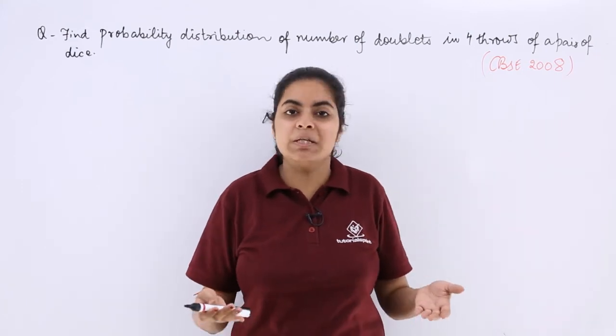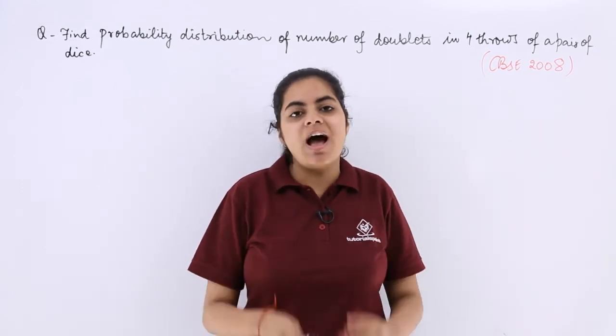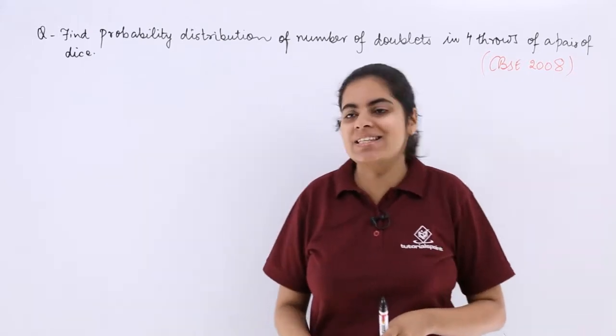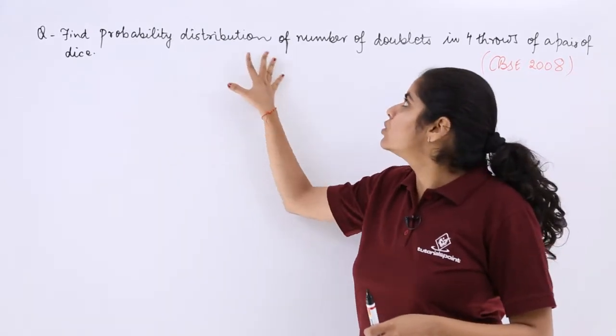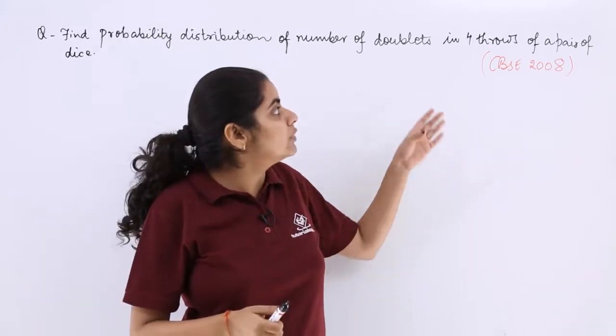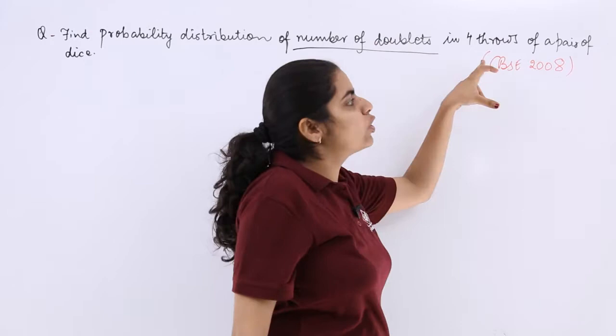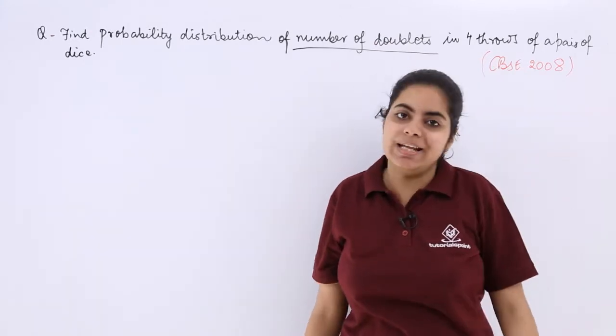Now the question is again a CBSE previously examination question asked in the CBSE examination 2008, an important one. It says find the probability distribution of number of doublets in four throws of a pair of dice.